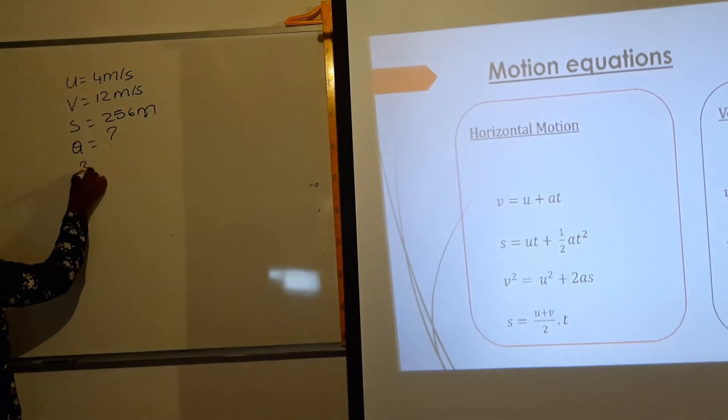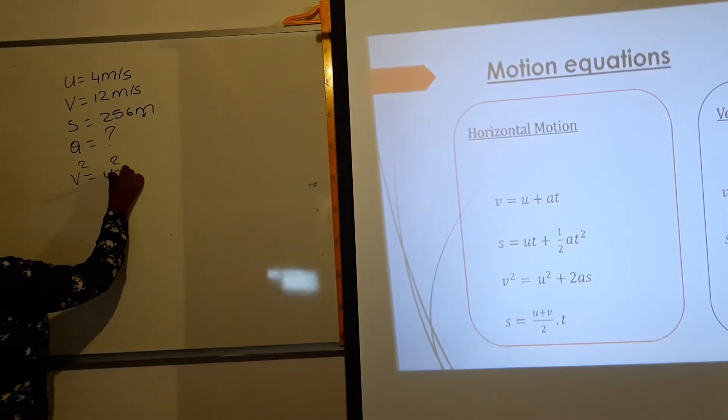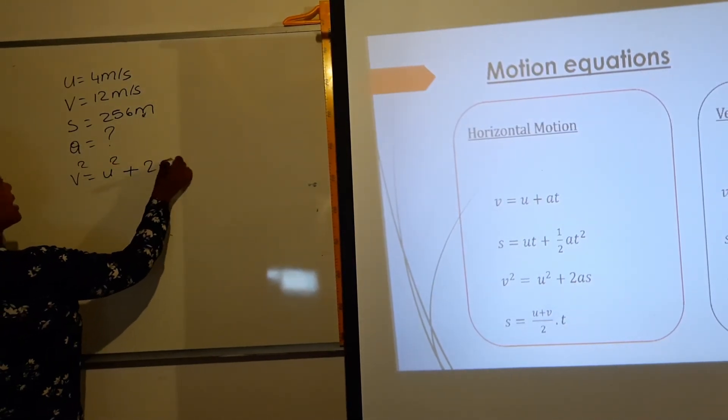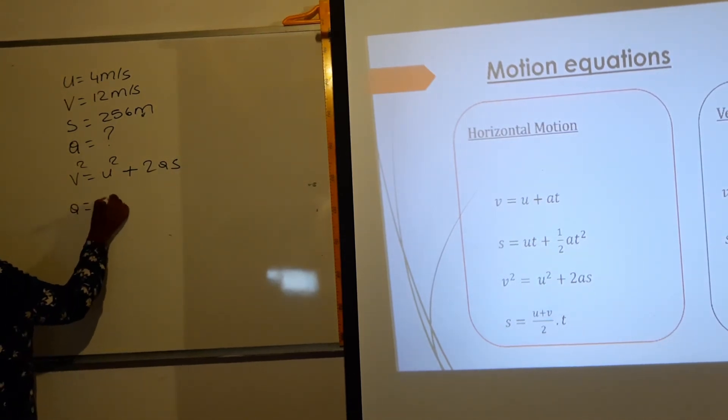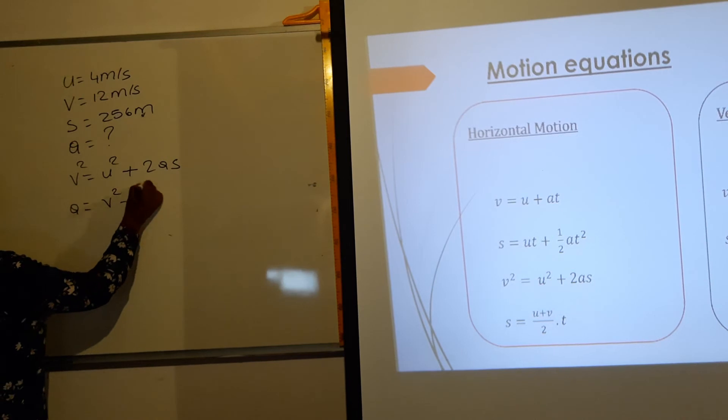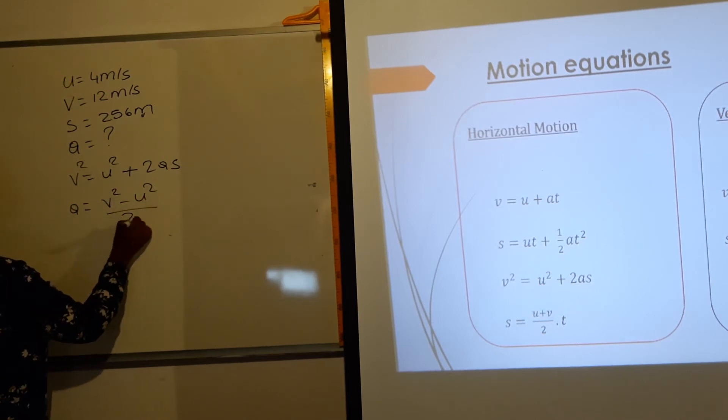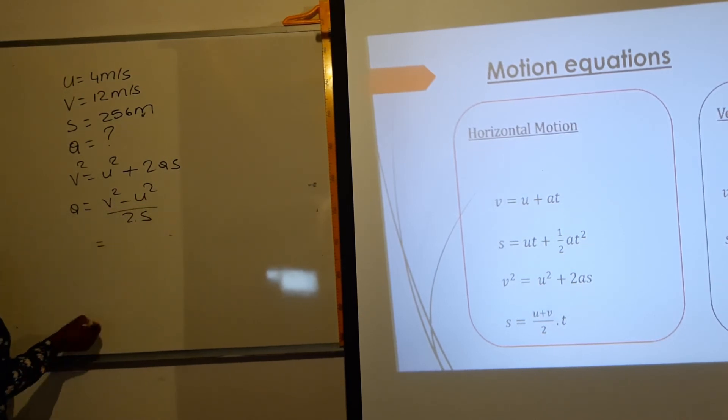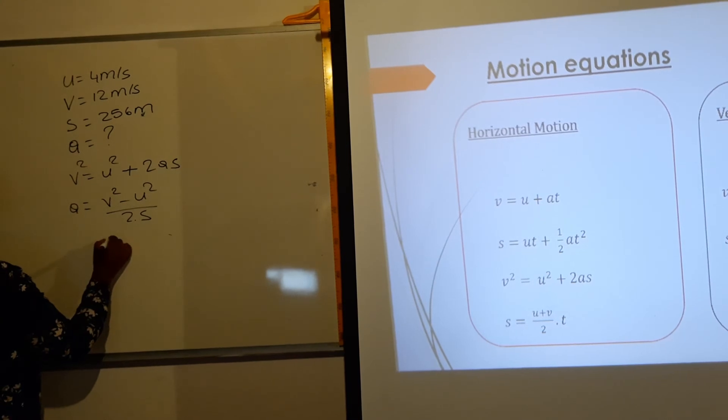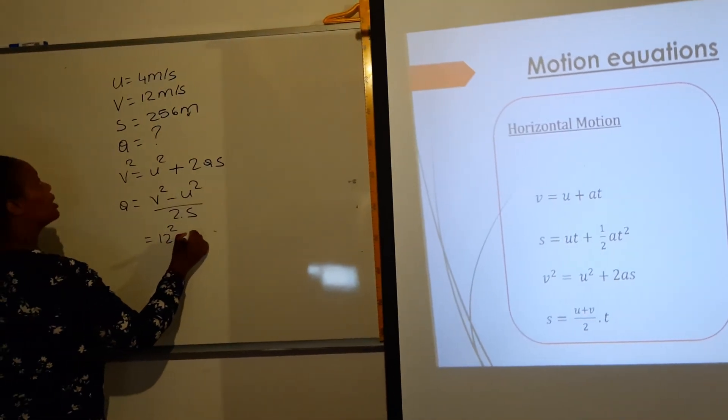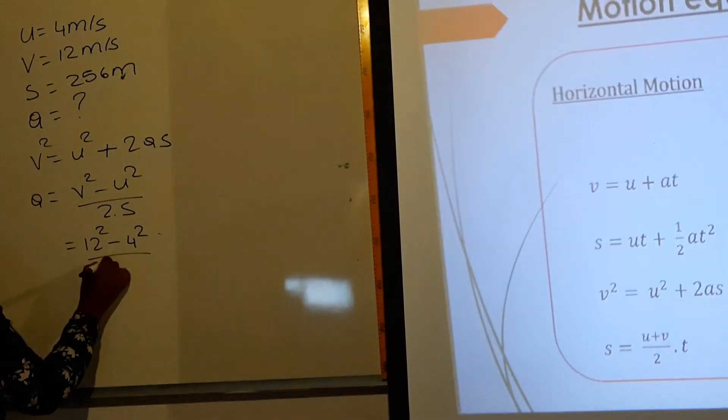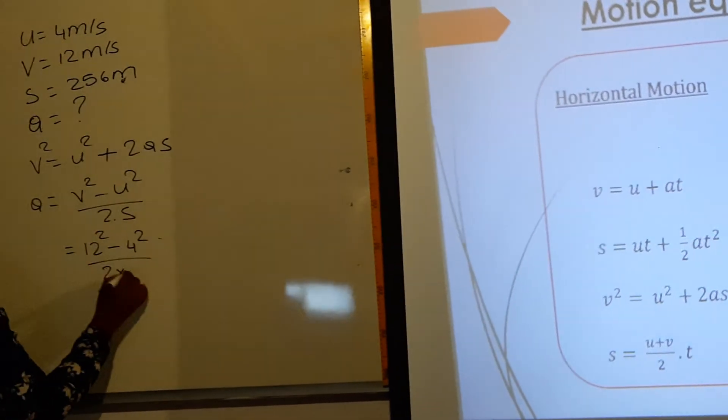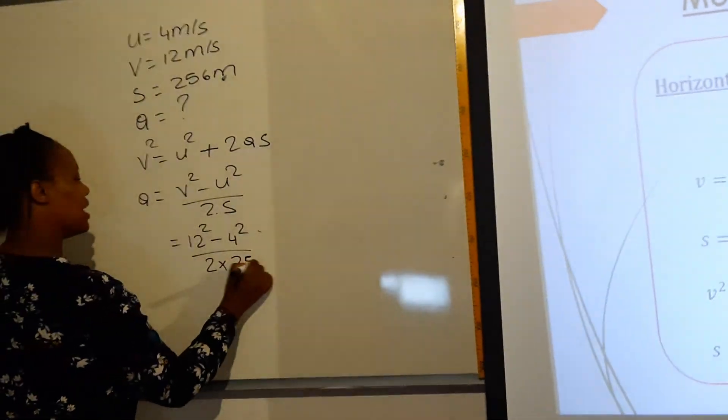The third equation says v squared equals u squared plus 2as. Then we make a subject of the formula. It will say v squared minus u squared over 2 times s. Then you substitute. V is 12 squared, u will be 4 squared, and then 2 times s. S is given as 256.